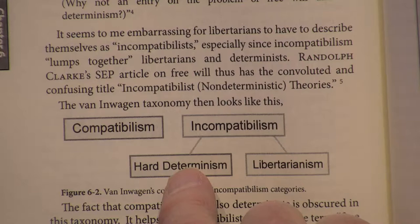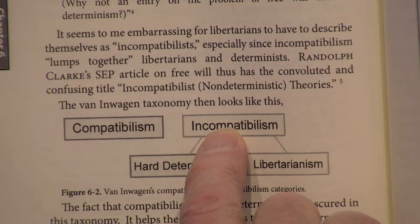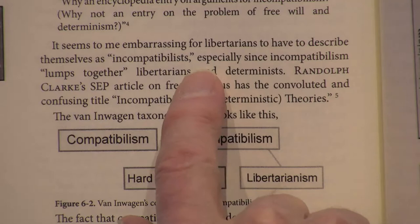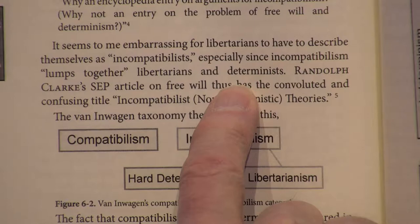Van den Wagen was an analytic language philosopher who knows the central issue of philosophy is to be clear with concepts and words. Nevertheless, he creates this very disturbing thing which lumped together the libertarians and the hard determinists. Randolph Clark wrote an article with the convoluted title 'Incompatibilist (Non-Deterministic) Theories' — which is very strange because the incompatibilist hard determinist is a determinist.